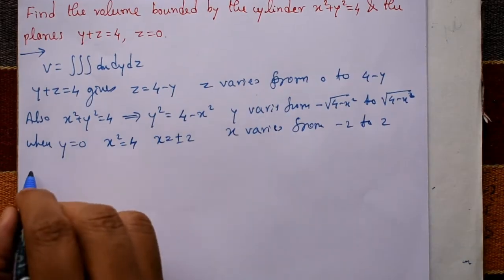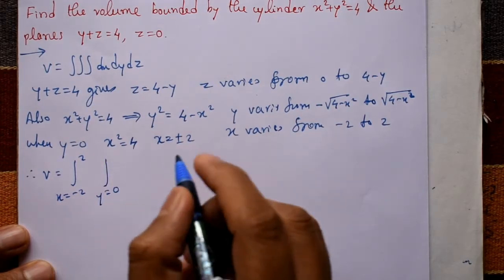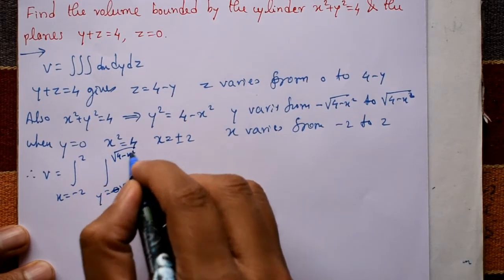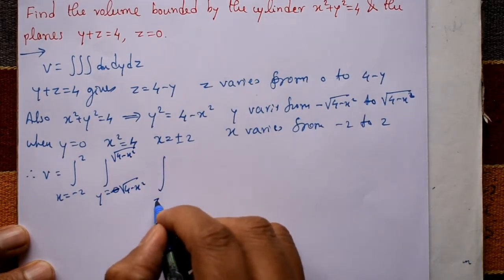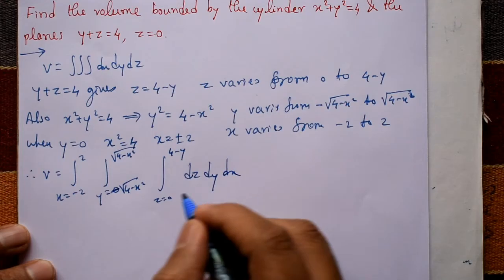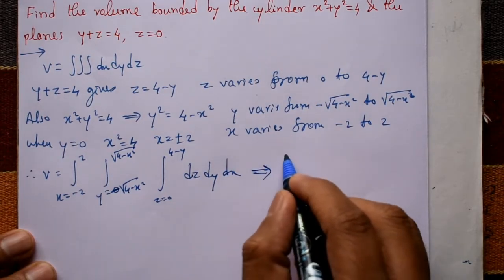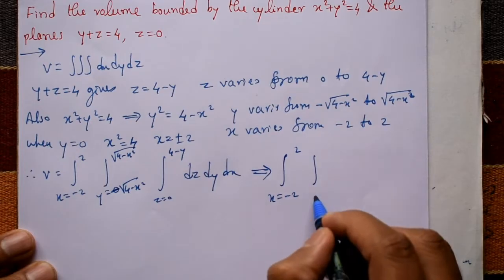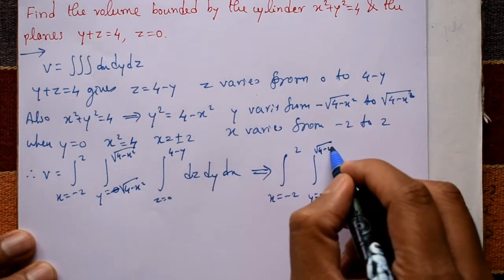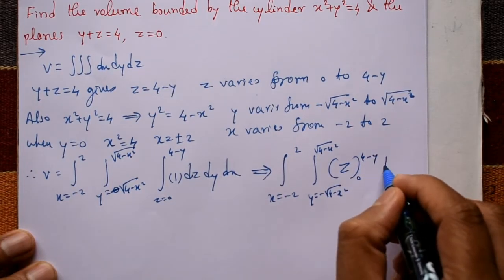Therefore, volume V equals the triple integral with x from minus 2 to plus 2, y from minus square root of 4 minus x squared to plus square root of 4 minus x squared, and z from 0 to 4 minus y. We integrate first with respect to z, second with respect to y, and third with respect to x.